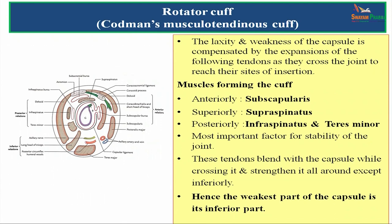The rotator cuff, otherwise known as Codman's musculotendinous cuff, is a muscular blending of four muscles whose tendons blend with the capsule to form a very strong support for the shoulder. The laxity and weakness of the capsule is compensated by the tendons of: anteriorly subscapularis, superiorly supraspinatus, and posteriorly infraspinatus and teres minor. These form the rotator cuff, one of the most important factors for stability of the shoulder joint. There is no muscle supporting inferiorly, hence the inferior part is the weakest part of the capsule.